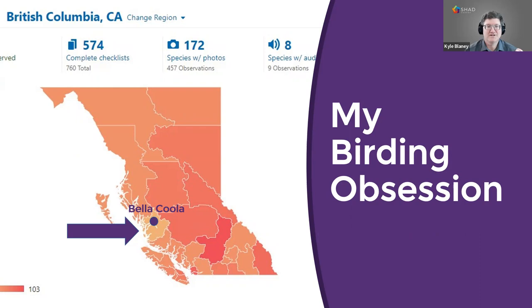I want to have this map as red as possible for every province of Canada, but it's really just an excuse to help me see the great diversity we have in our country. I go birding every day — one of the statistics I'm most concerned with is my eBird streak, which tells me how many days in a row I've birded, and I want that to go for many thousands more days.